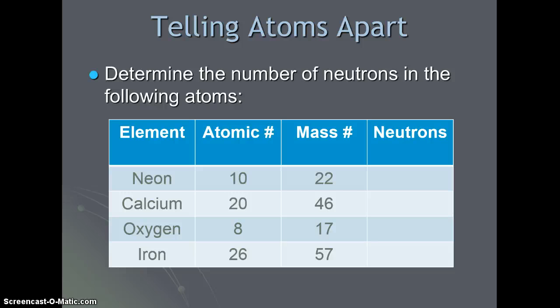To determine the number of neutrons, we subtract the mass number from the atomic number. So neon has 12 neutrons, calcium has 26, oxygen has 9, and iron has 31.